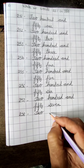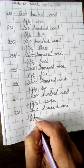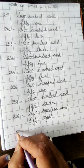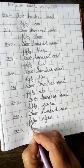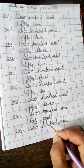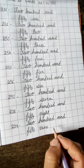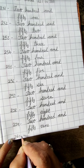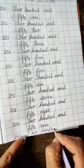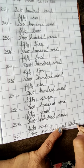258: T-W-O, two; H-U-N-D-R-E-D, hundred; A-N-D; F-I-F-T-Y, fifty; E-I-G-H-T, eight — two hundred and fifty eight. 259: T-W-O, two; H-U-N-D-R-E-D, hundred; A-N-D; F-I-F-T-Y, fifty; N-I-N-E, nine — two hundred and fifty nine. And then at last, 260: T-W-O, two; H-U-N-D-R-E-D, hundred; A-N-D; S-I-X-T-Y, sixty — two hundred and sixty.